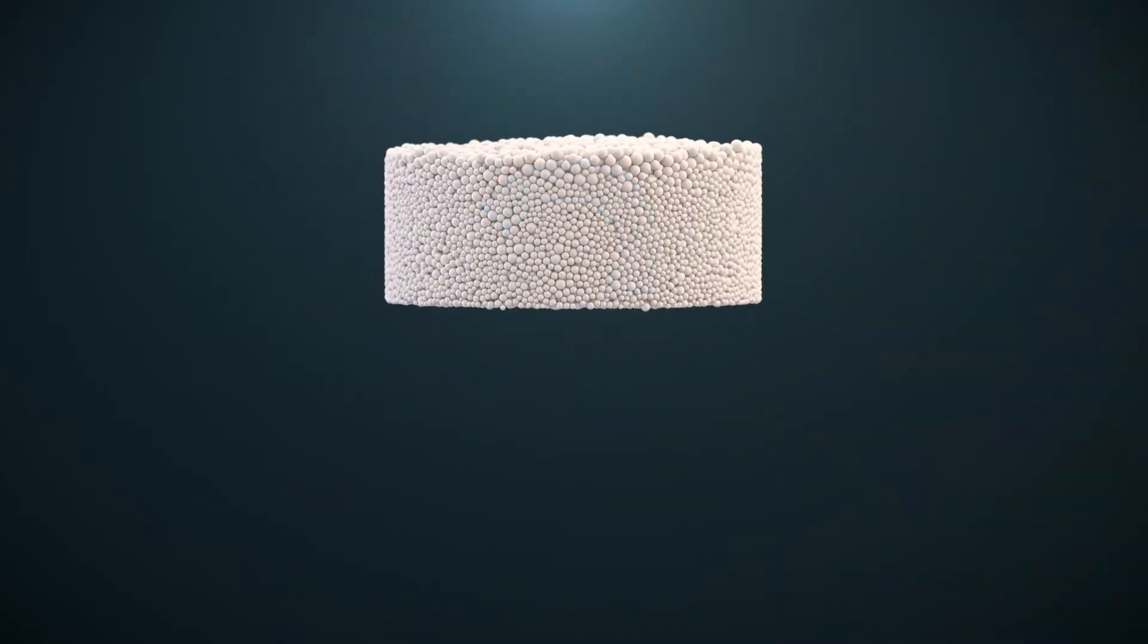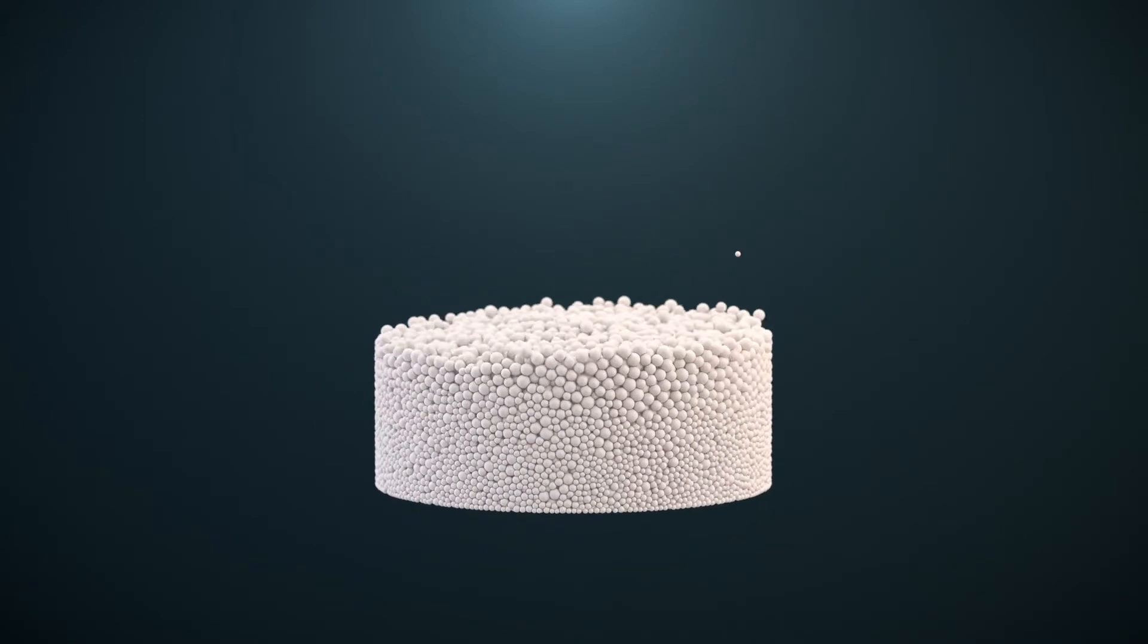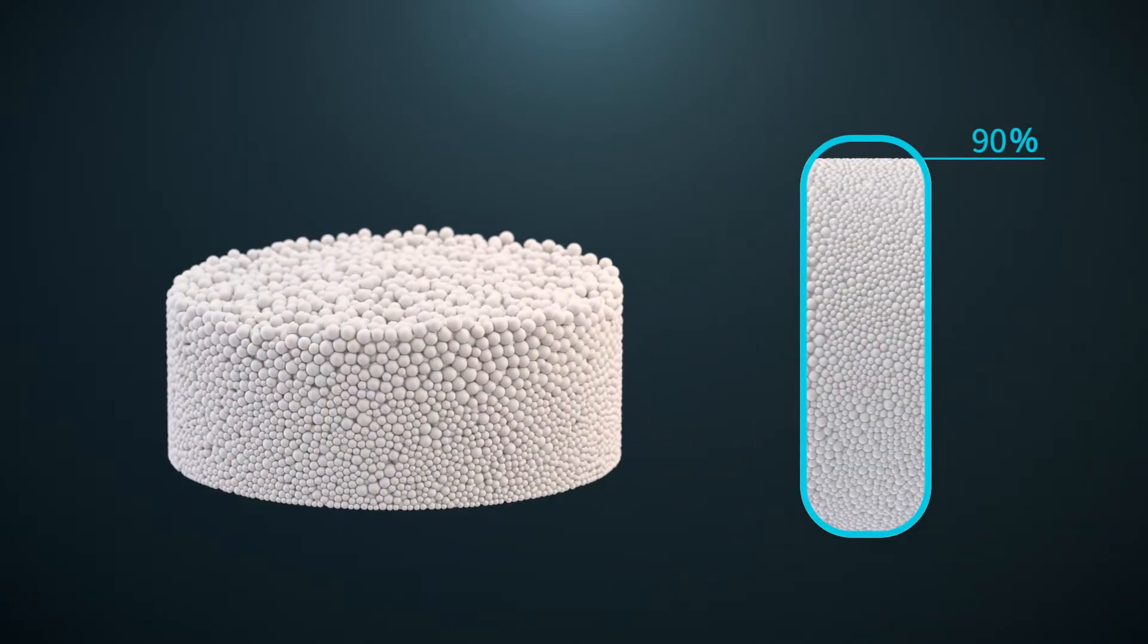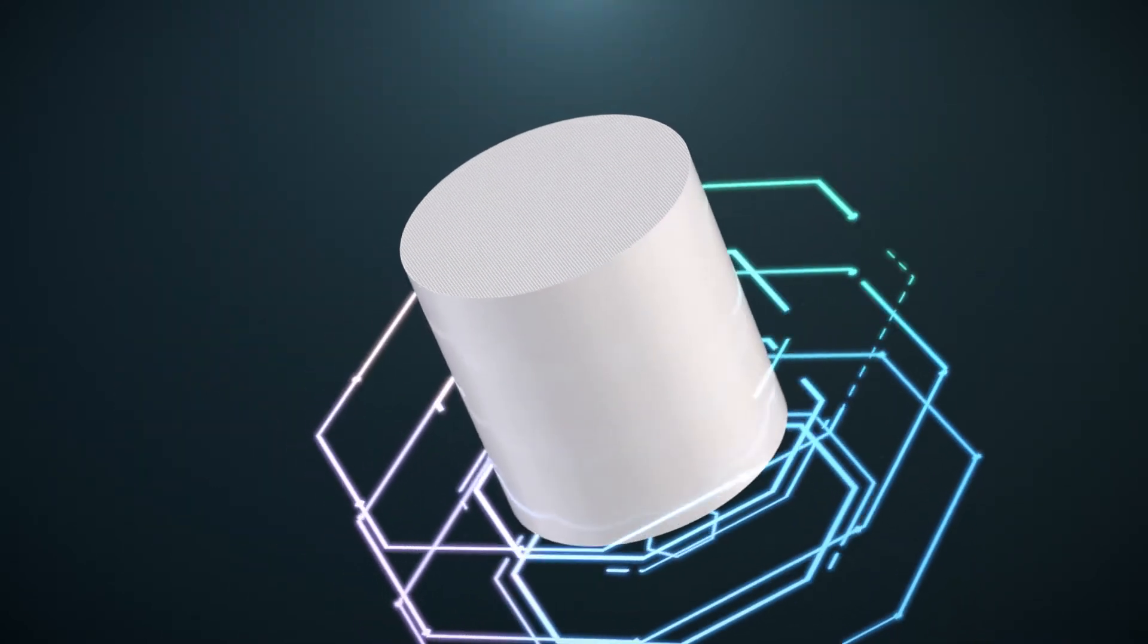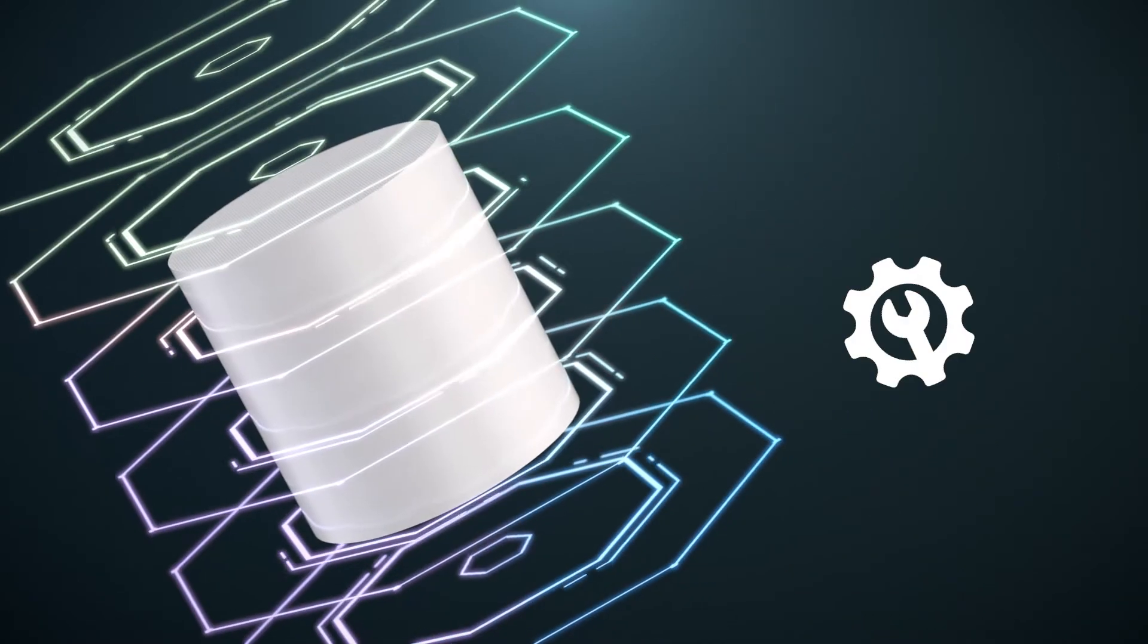Second, desiccant beads get pushed around the drying tower during cycling. This friction causes them to decay over time, which can compromise your dew point. Serides lasts much longer to protect your air quality and extend your service intervals.